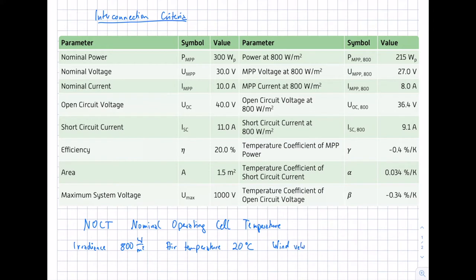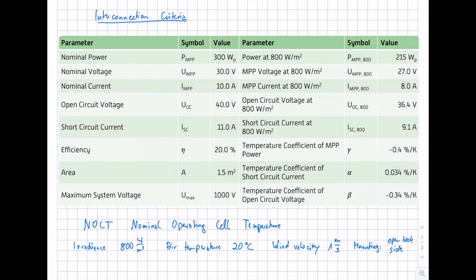NOCT conditions also include a wind velocity of 1 meter per second — which is not considered under STC — and an open backside mounting of the module. This open backside mounting means that wind can cool the backside of the modules and thus the cells. Under these typical nominal conditions, we get different values for power and voltage: the drop in irradiance reduces current, and the different temperature from STC gives different voltage and power values.